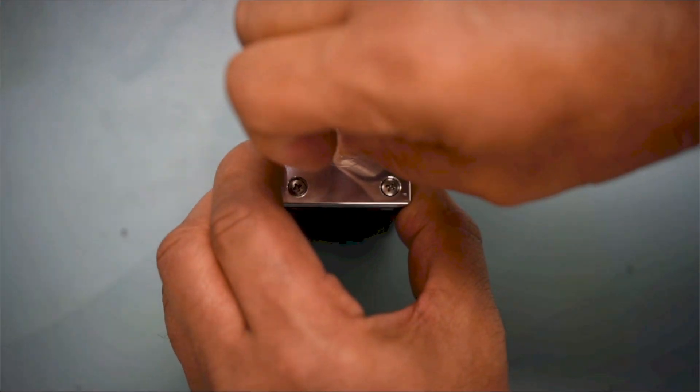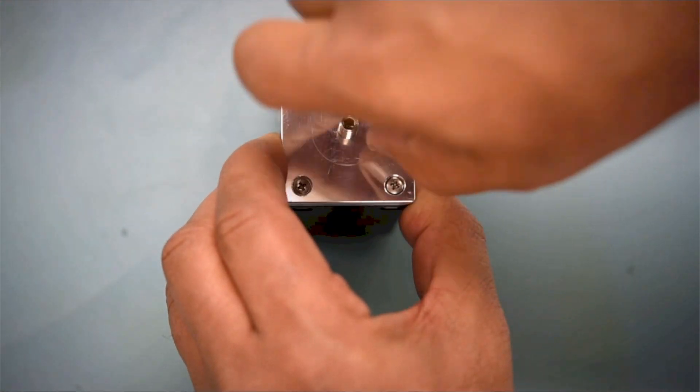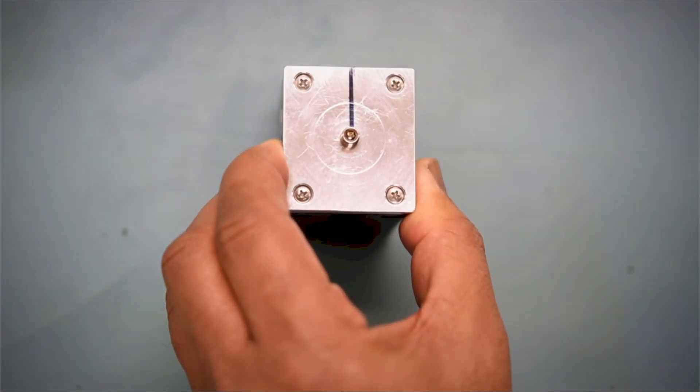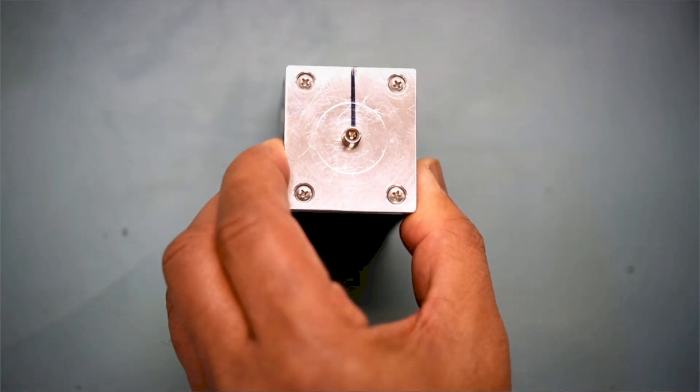Next, insert the set screw into the base plate until it reaches resistance. Since this is an instructional video, I'm not applying Loctite to the set screw. However, you'll need to do so when you assemble your sensor.